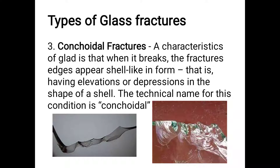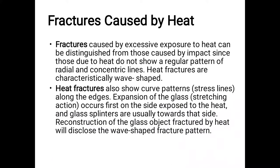Another one is concoidal fracture. When we say concoidal fracture, nasa edges siya — sa mga dulo ng glass — that is having elevation or depression. Ang pagkakaiba ng radial at concentric sa concoidal fracture: ang radial at concentric is usually nasa pinaka-center ng glass, o kahit hindi center, malapit sa gilid pero hindi yung edge. Pag nag-edge na siya, ang tawag natin doon is concoidal fracture.